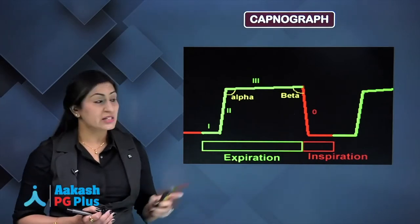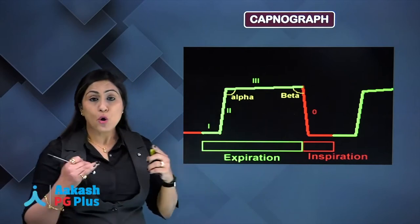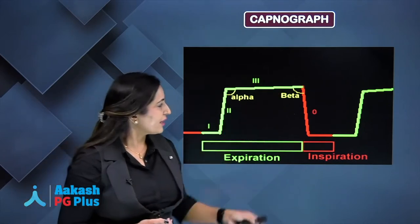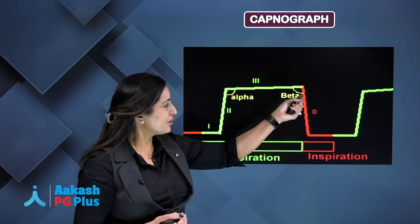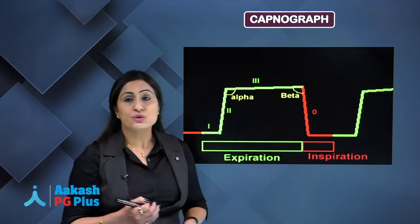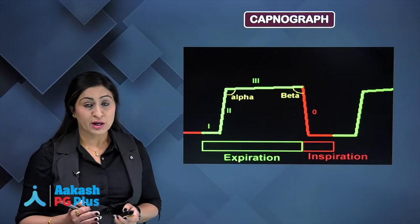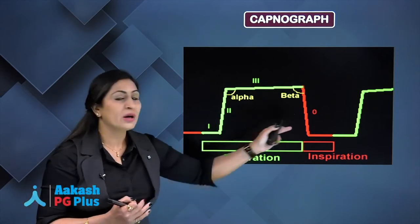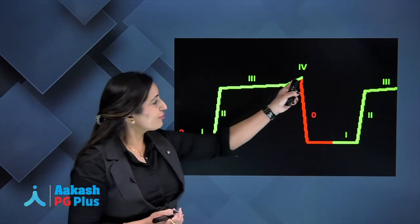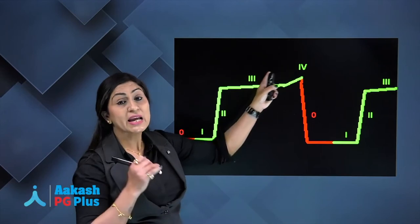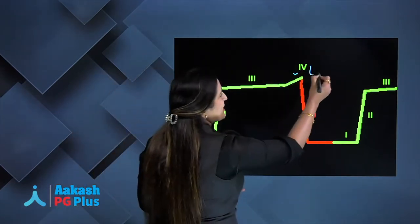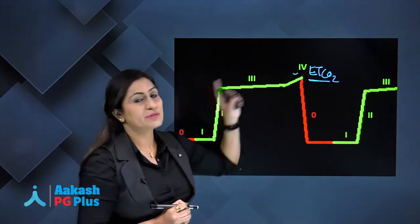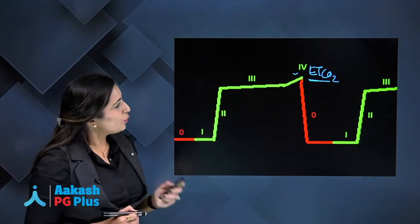The second phase is the expiratory upstroke, when the alveoli begin to expire CO2. Phase 3 is the alveolar plateau, where almost all alveoli have exhaled. The alpha angle lies between phases 2 and 3, and the beta angle is just at the end of expiration before inspiration begins. CO2 drops back to zero during inspiration since the inspiratory mixture has no CO2.